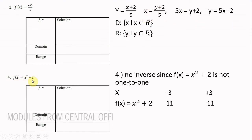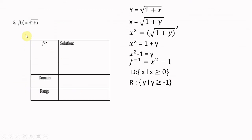Number 4: f(x) = x² + 2 has no inverse since it is not one-to-one. To prove: when x = −3 and x = 3, both give f(x) = 11. Since two values of x produce the same y, the function is not one-to-one, so we do not proceed to find its inverse.